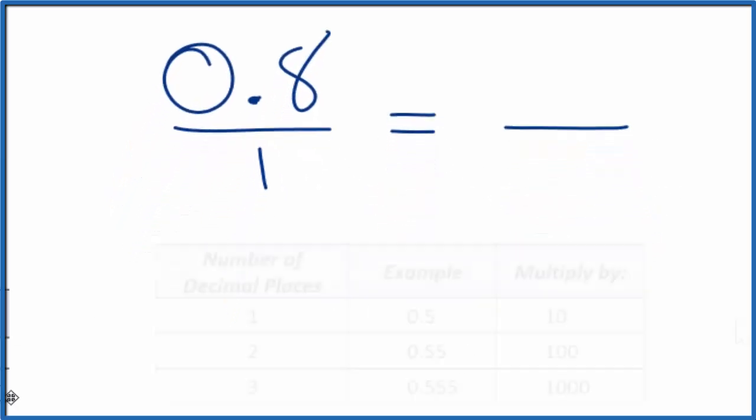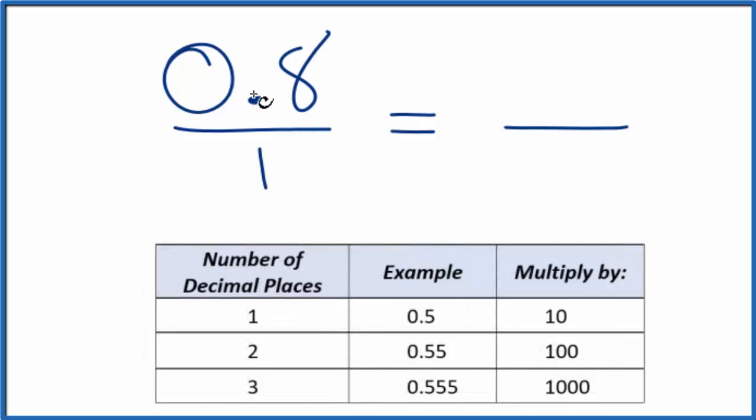This chart might be helpful. So if we have just one decimal place after the zero, one decimal place, for example 0.5 or 0.8, we're going to multiply by 10.